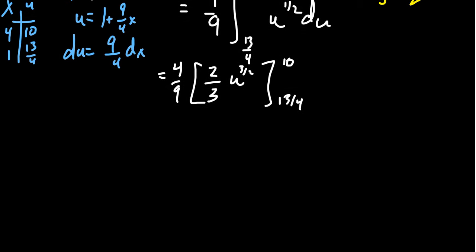Multiplying the coefficients together, we're going to end up with 8 over 27. And then plugging in the 10, we're going to get 10 to the 3 halves minus 13 fourths to the 3 halves, like so.